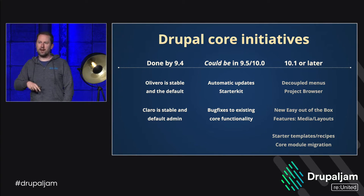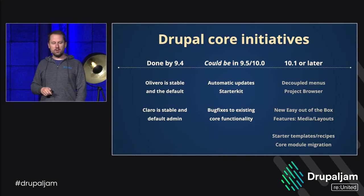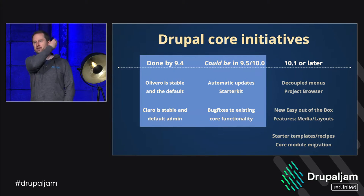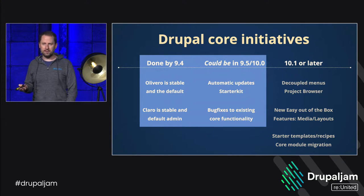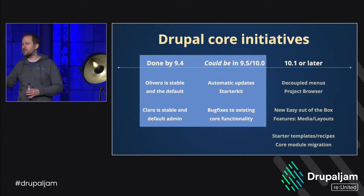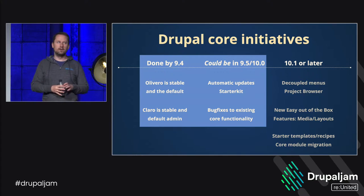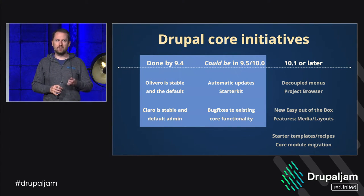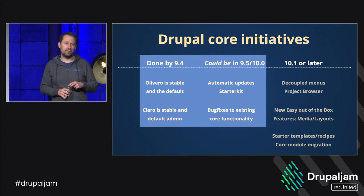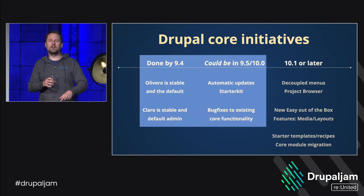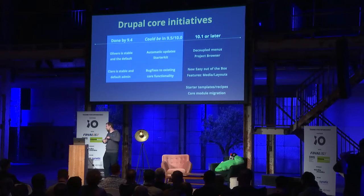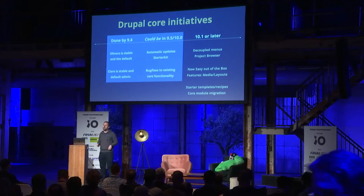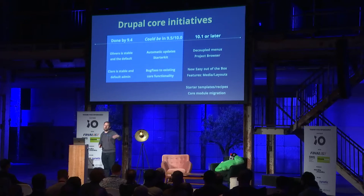These are two new initiatives that Dries announced in his keynote at DrupalCon Portland. Everything in the blue box represents things done by 9.5 that we believe won't be disruptive to add. The 9.5/Drupal 10 beta needs to be complete by September 9th — that's in three months — so we're focusing on these items. Features not included in 10.0 can be committed to the 10.1 branch once the beta is out.